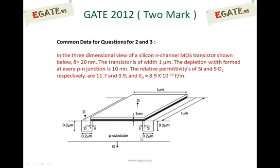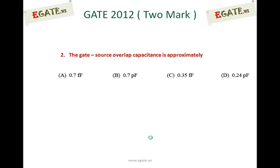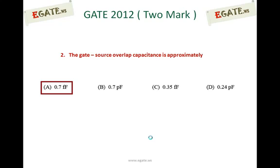All sides of drain except the top are going to be PN junctions. The depletion width formed at each PN junction is 10 nanometers. The relative permittivity of silicon is 11.7, silicon dioxide is 3.9, and epsilon-naught is 8.9×10⁻¹² farad per meter. These are the given values. We need to calculate the gate-source overlap capacitance, and the correct answer is 0.7 femtofarad.